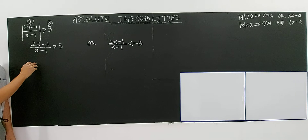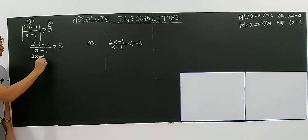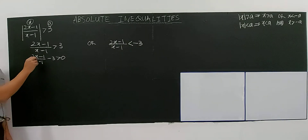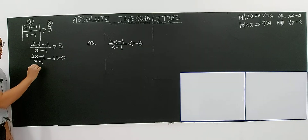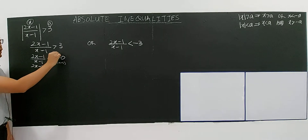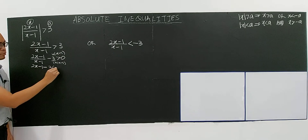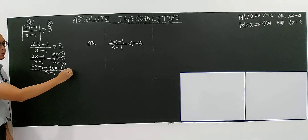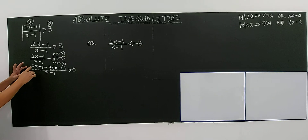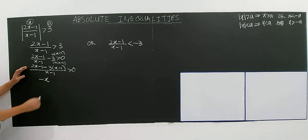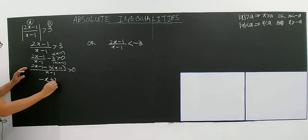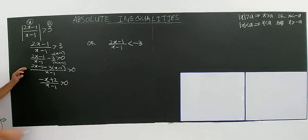I use a table of signs to solve rational inequalities. For case one: (2x minus 1)/(x minus 1) minus 3 greater than zero. Equate the denominator — multiply 3 by (x minus 1) over (x minus 1). You get: [2x minus 1 minus 3(x minus 1)] divided by (x minus 1) greater than zero. Simplifying: 2x minus 3x gives negative x; minus 1 plus 3 gives positive 2. So you have (negative x plus 2)/(x minus 1) greater than zero.